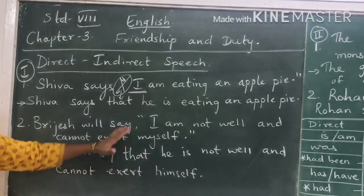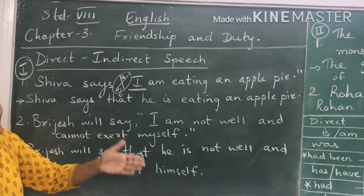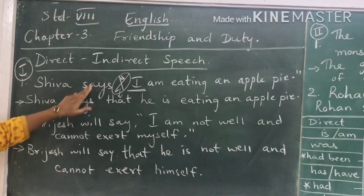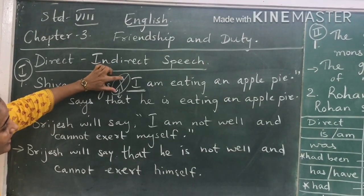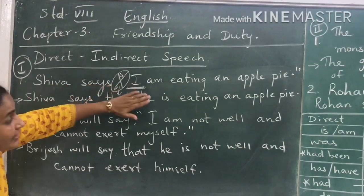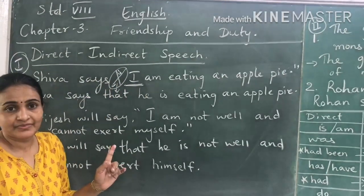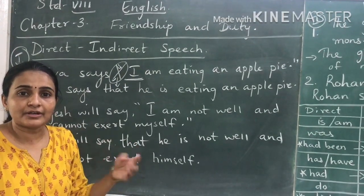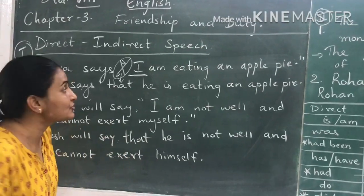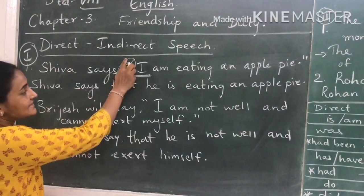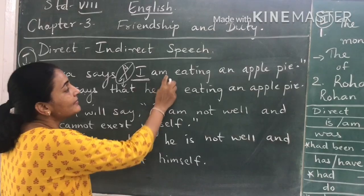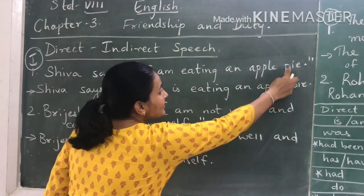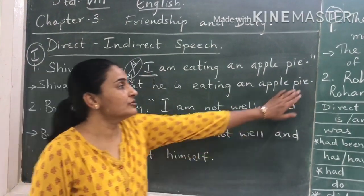Now after I explain the second type of sentence, I will explain the difference. So Shiva says — this comma and open inverted, we don't have to write that in indirect speech. We don't have to put that comma, open inverted, close inverted — all that in indirect speech. So: Shiva says that he is eating an apple pie, and a full stop. We didn't put the open inverted or the close inverted.